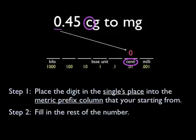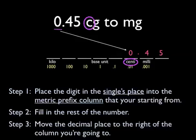Step 2 is to fill in the rest of the number. In this case, 0.45. You notice that the five is kind of hanging out there. Feel free to add additional columns as needed. You don't have to, but it helps keep your work organized.